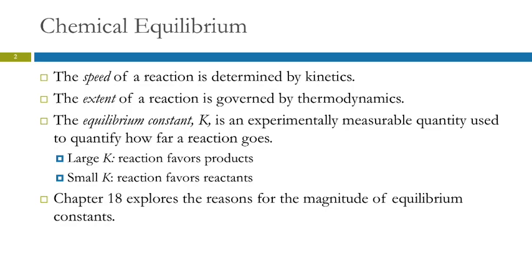Does the reaction go to completion? Does it go halfway? Does it go a little bit? If we have a very large equilibrium constant, the reaction is going to favor the products — there will be more products once it comes to equilibrium than reactants. If you have a small equilibrium constant, that means it favors the reactants.